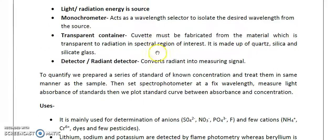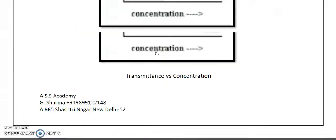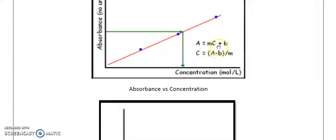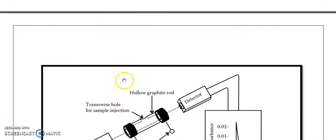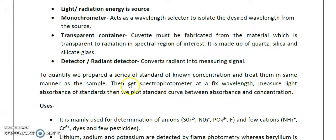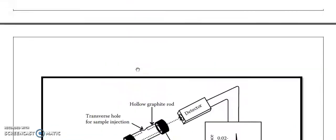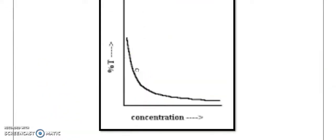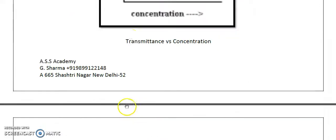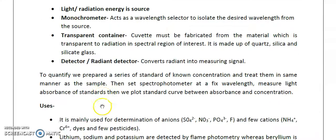The calculations are done according to the equation y = mx + c, where m is the slope, x is the concentration, and c is the intercept. So x can be calculated as (y − c) / m. To quantify, we prepare a series of standard solutions of a given system at known concentrations.